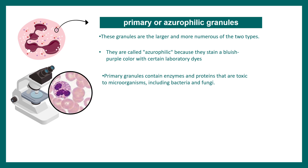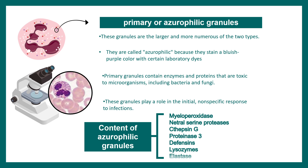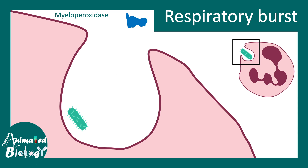Primary granules or azurophilic granules contain proteins which are toxic to microorganisms, and they play an initial and nonspecific role in response to any infection. The contents of the azurophilic granules include myeloperoxidase, cathepsin G, proteinase 3, defensins, lysozymes, elastase, and many more.